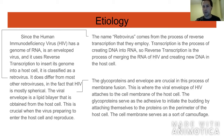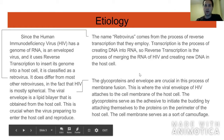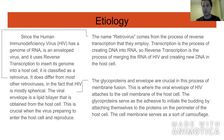The glycoproteins and the envelope are crucial in the cell membrane fusion. The glycoproteins recognize the proteins on the outside of the host cell, and since the virus has a cell membrane, it's able to fuse onto the outer wall of the cell. This also provides some camouflage for the virus so that the host immune system does not attack it.